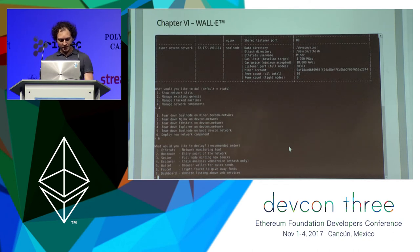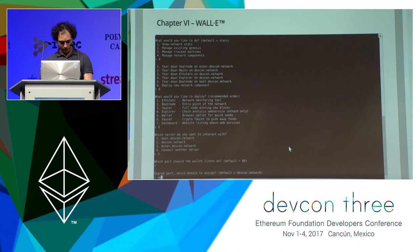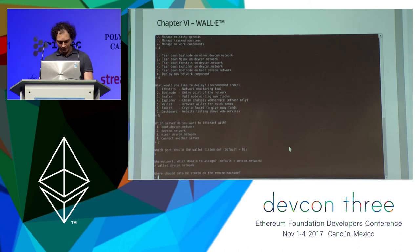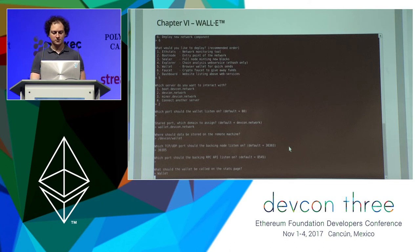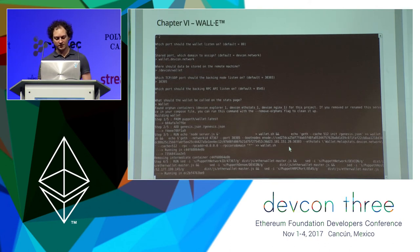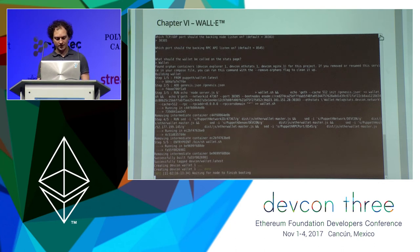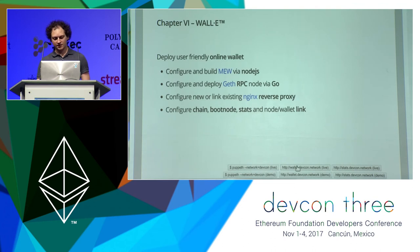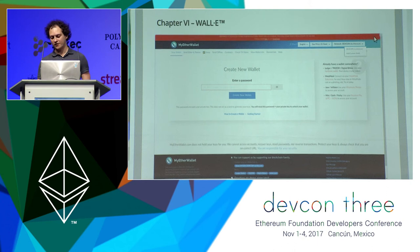Let's deploy a new network component — a wallet — to our website server. Yes, we want to share port 80 and call it wallet.defconnetwork. Where should we store the data? defcon-wallet, with slightly adjusted defaults. Let's call it wallet on the stats page — since it also runs a backend node, wallet seems right. Puppet is configuring everything in the background and pushing out the data. And if we check our wallet — boom, we have our wallet. It is actually configured for the DEFCON network, with the backend node deployed to connect to. The frontend and everything seems to work nicely.